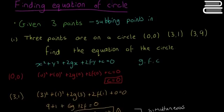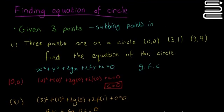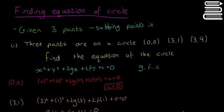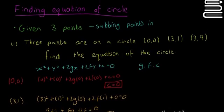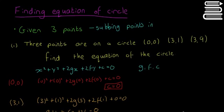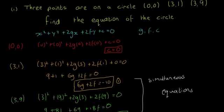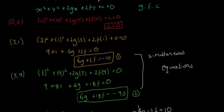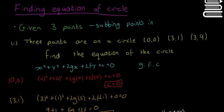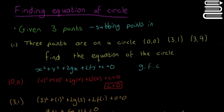That's the method you're going to use all the time when given three separate points — sub them in, get a few simultaneous equations, and solve. We were lucky one point was (0, 0), which immediately gave c = 0. If all three points have non-zero coordinates, you'd have three simultaneous equations in g, f, and c to solve — a bit harder, but the same method. Next time we'll look at finding the equation of a circle given two points and a line through the centre.